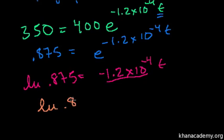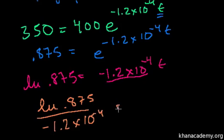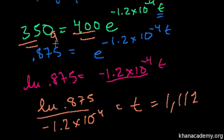So the natural log of 0.875 divided by minus 1.2 times 10 to the minus 4 is equal to the amount of time it would take us to get from 400 grams to 350. So this is equal to 1,112 years to get from 400 to 350 grams of my substance.